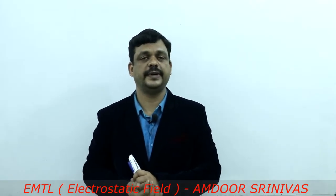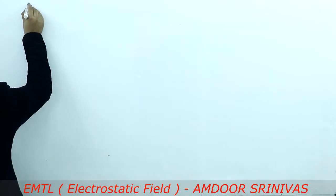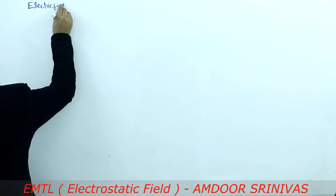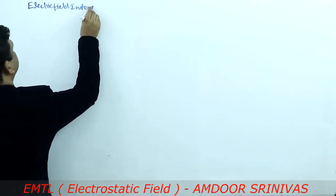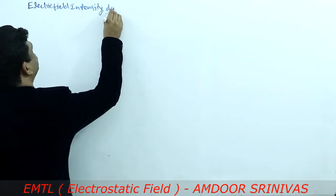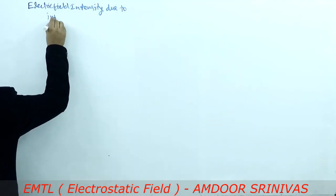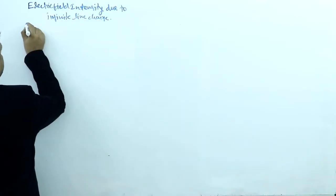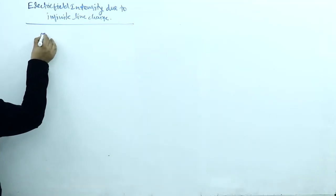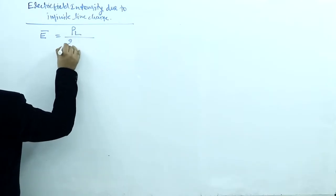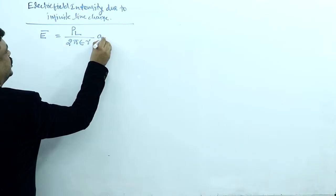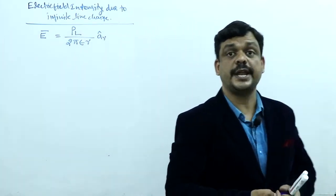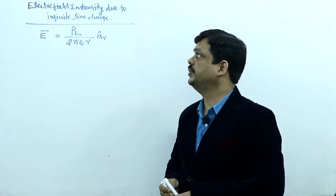Electric field intensity due to infinite line charge is one of the very important topics from EMF. The standard equation is E = ρL / (2πεr) into the unit vector. This is the standard formula for electric field intensity due to infinite line charge.